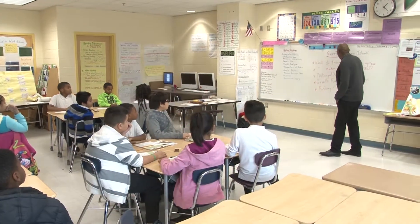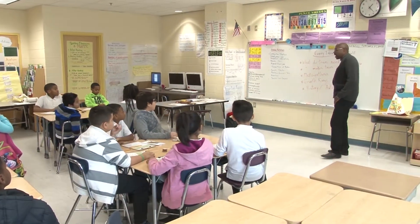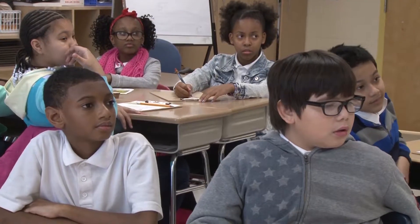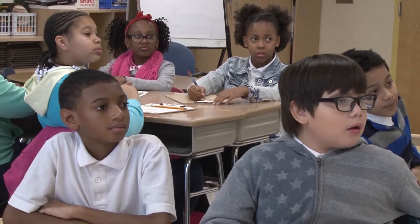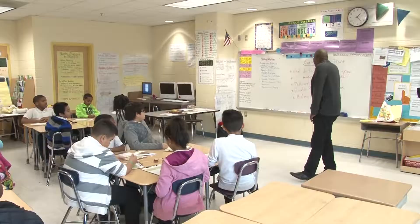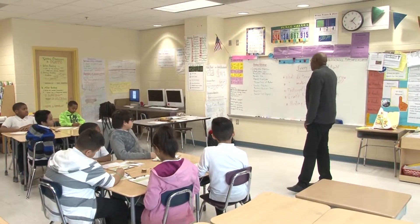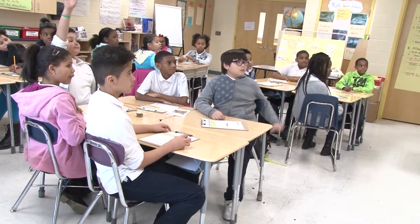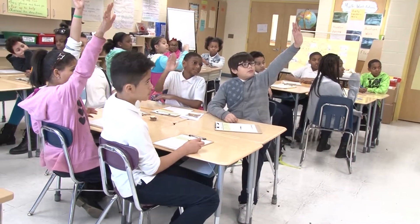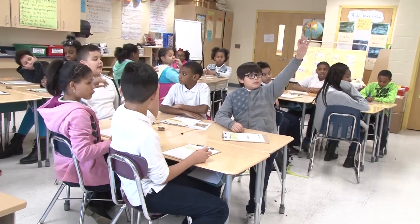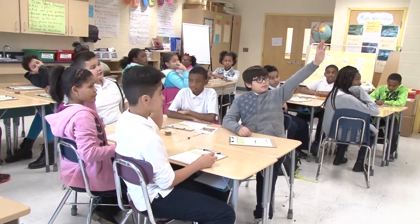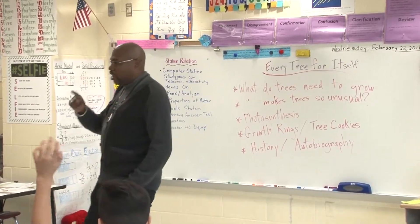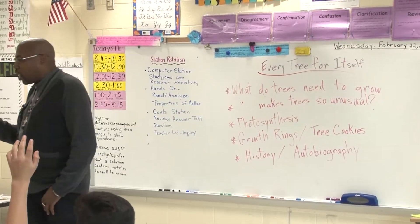Today we are going to do an activity entitled Every Tree for Itself. The first thing I want to talk about is what do trees need to grow? Sunlight and water are two things that are very important for a tree to grow.